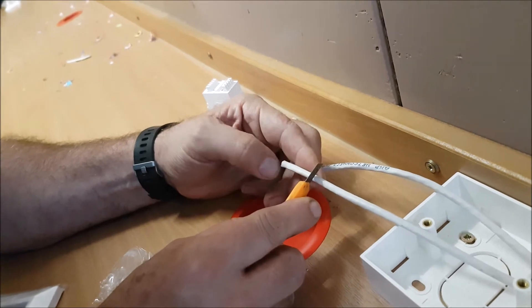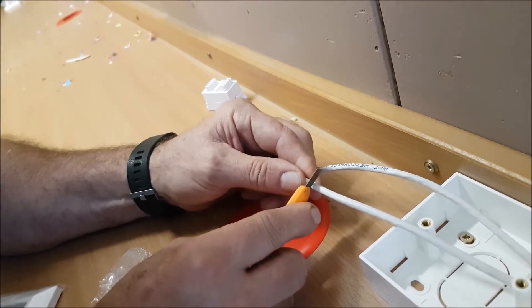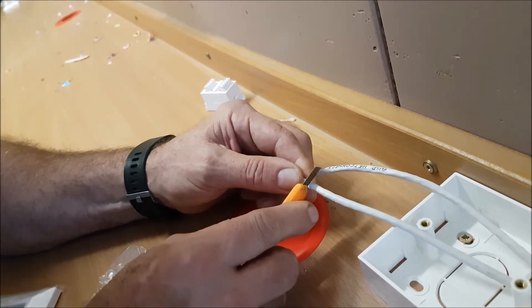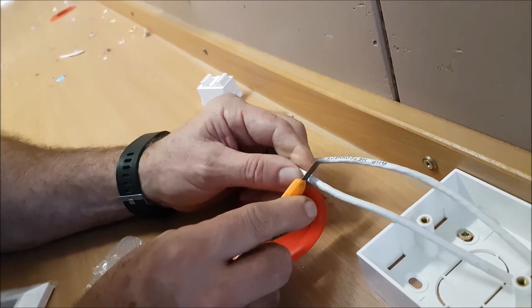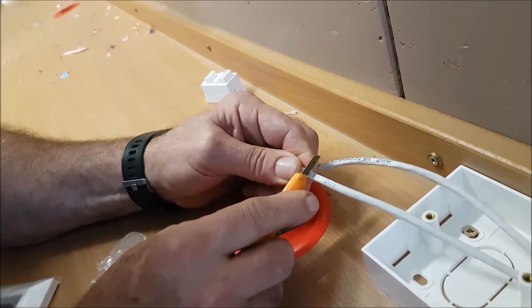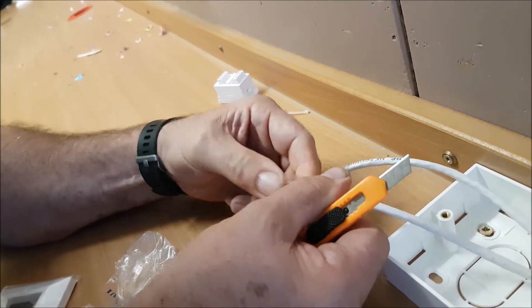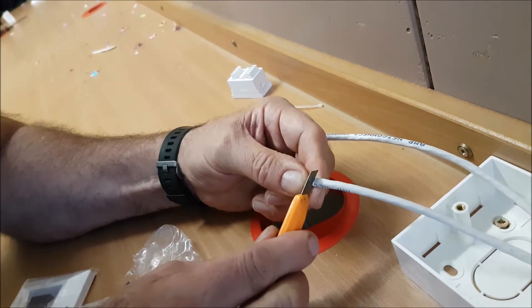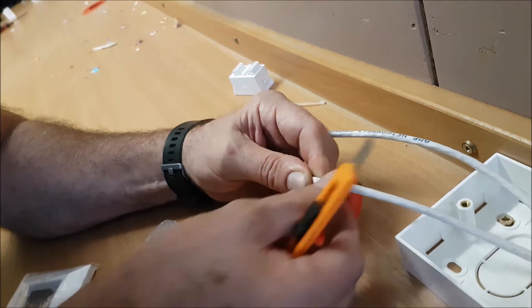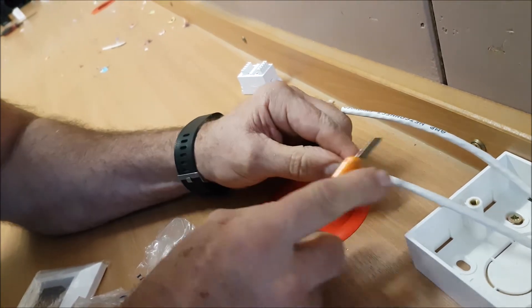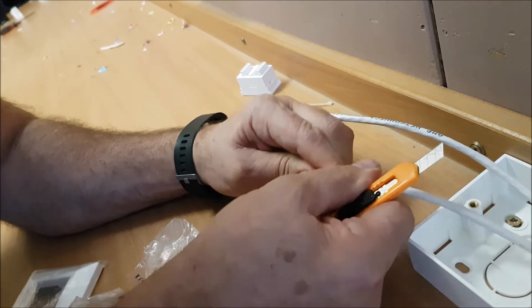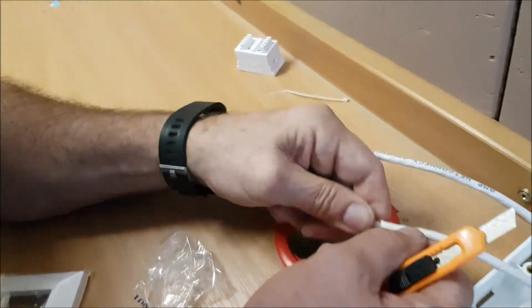So we're going to take off a reasonable amount. All I'm doing is gently scoring the outer sheath. You don't want to go through if you can help it, just score it because this is quite hard plastic. If you bend it slightly you'll see it just slightly split. So only cut the outer sheath.